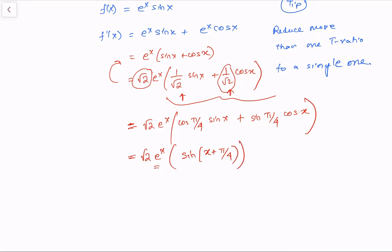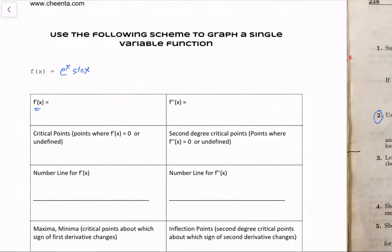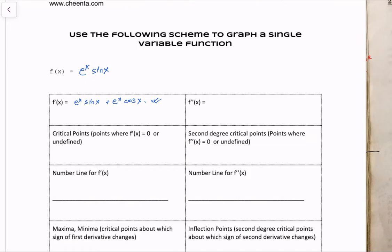Now we have only two functions involved in the expression: e to the x and sine(x + π/4). Let's record that in the chart. We'll keep track of both forms of f'(x) — the expanded form is easier when computing f''(x), while the compact form, root 2 times e to the x times sine(x + π/4), is easier for finding critical points.